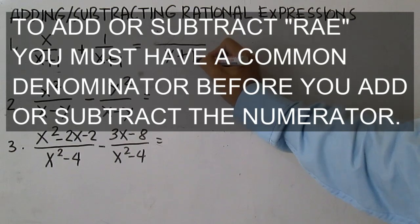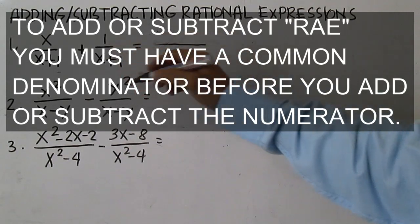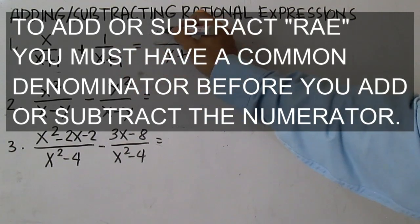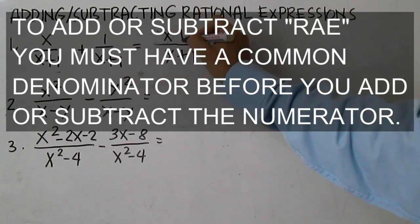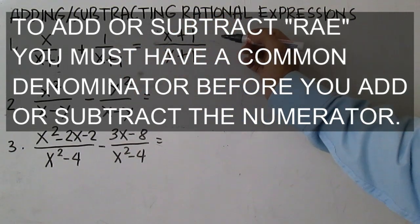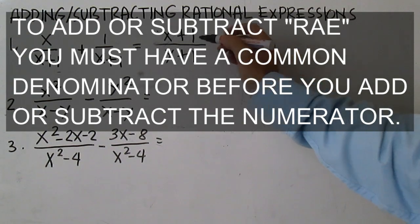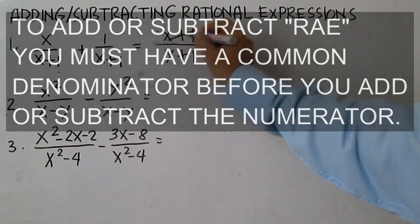To add or subtract rational algebraic expressions, you must have a common denominator before you add or subtract the numerator.